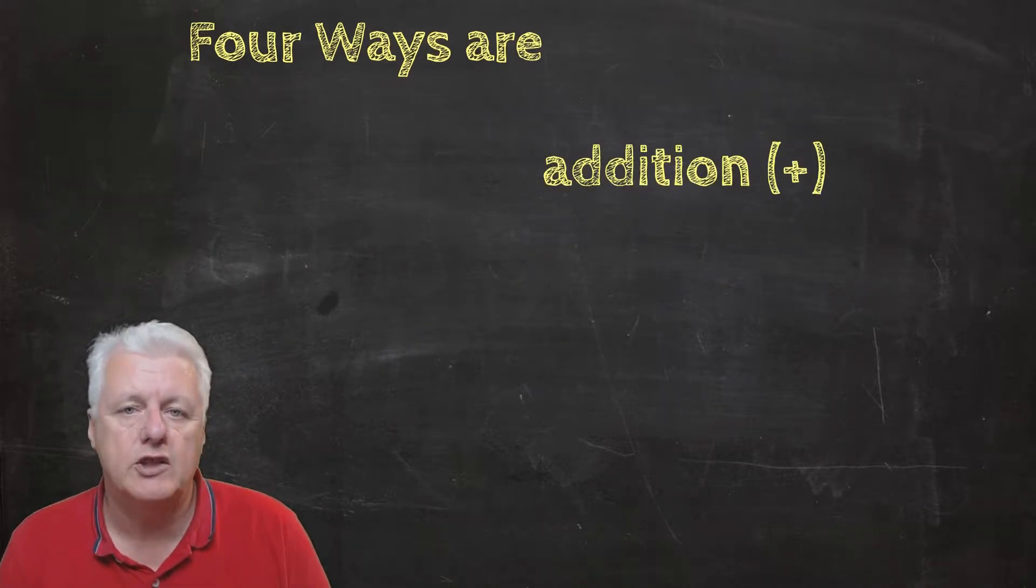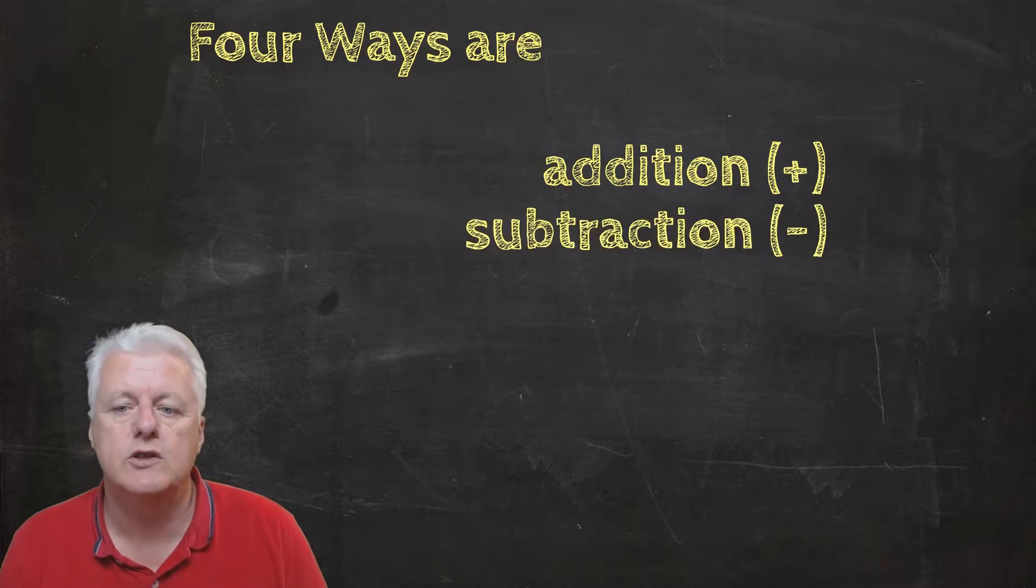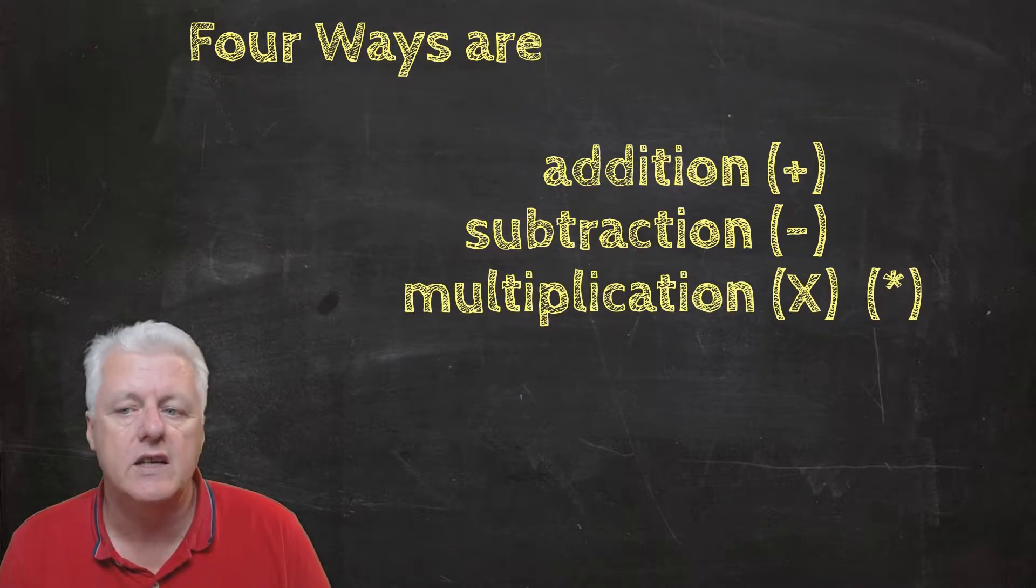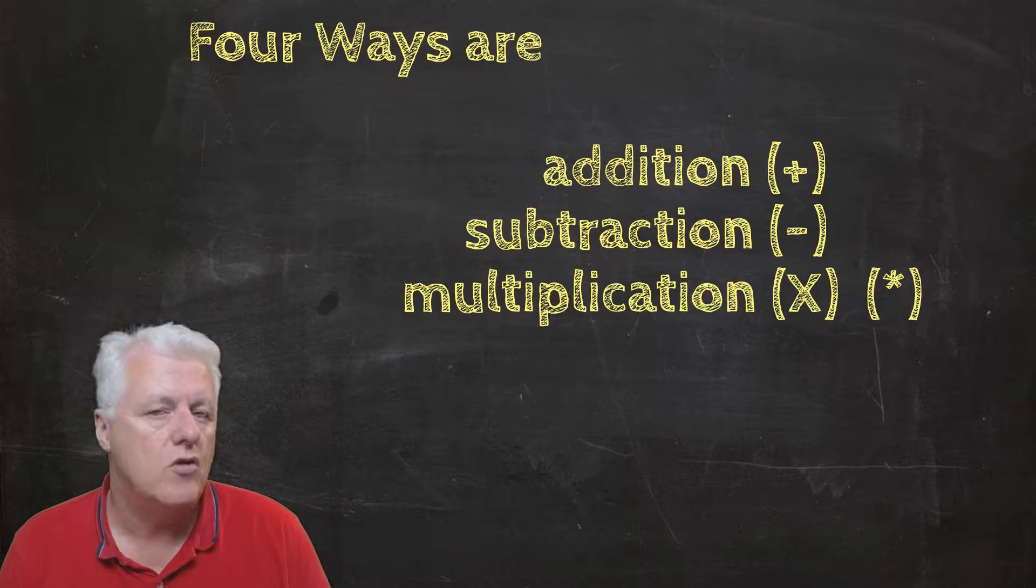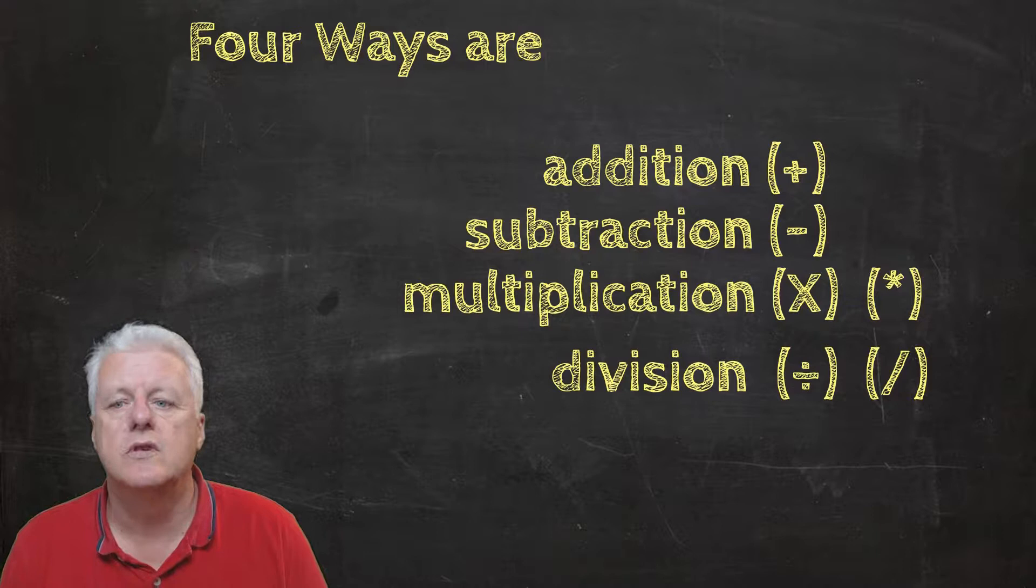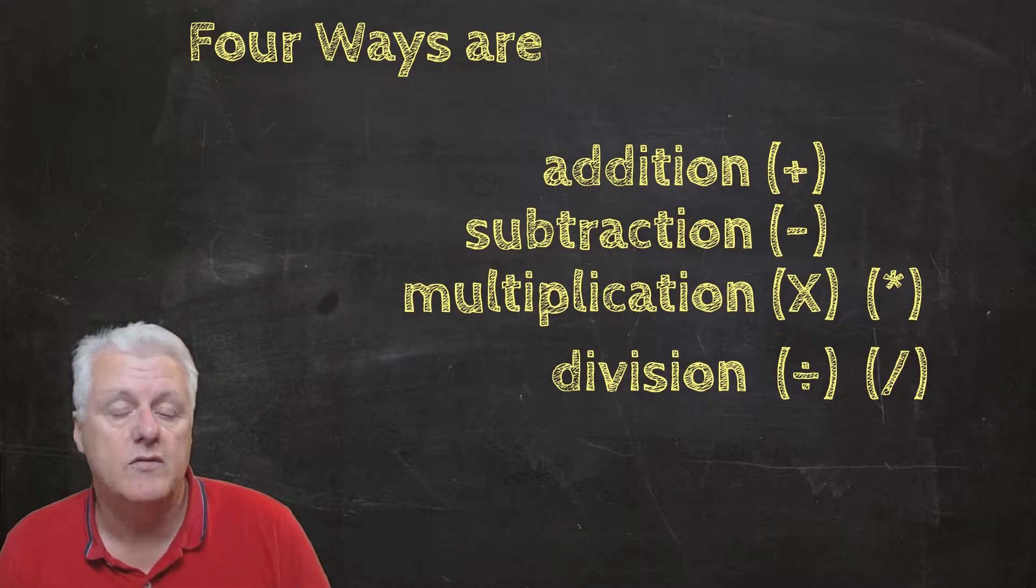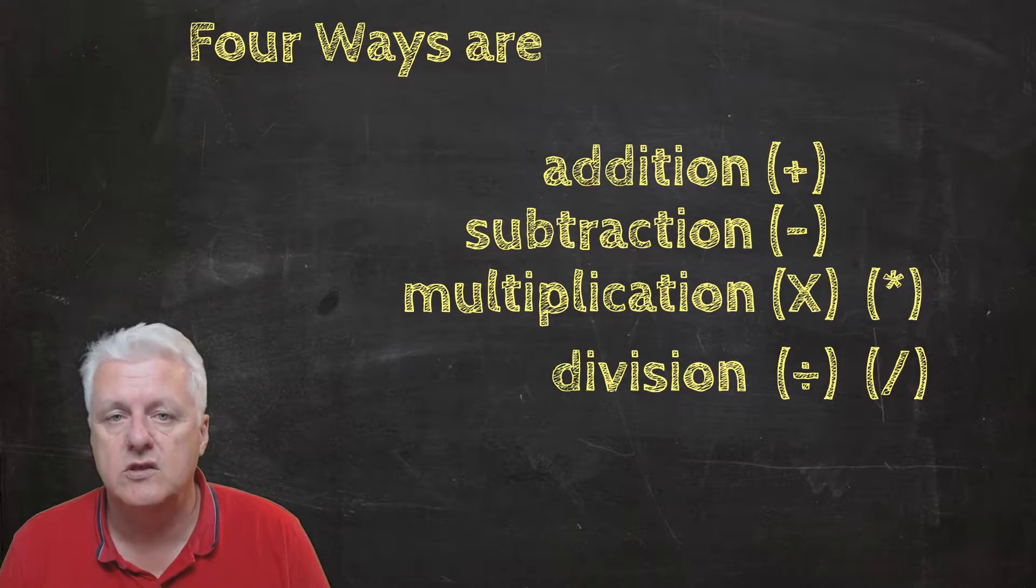Multiplication has two symbols: the X and the computerized symbol which is a star or an asterisk. Division also has two symbols: the division bar and the computerized slash. But be careful—in fractions, the slash represents a fraction.